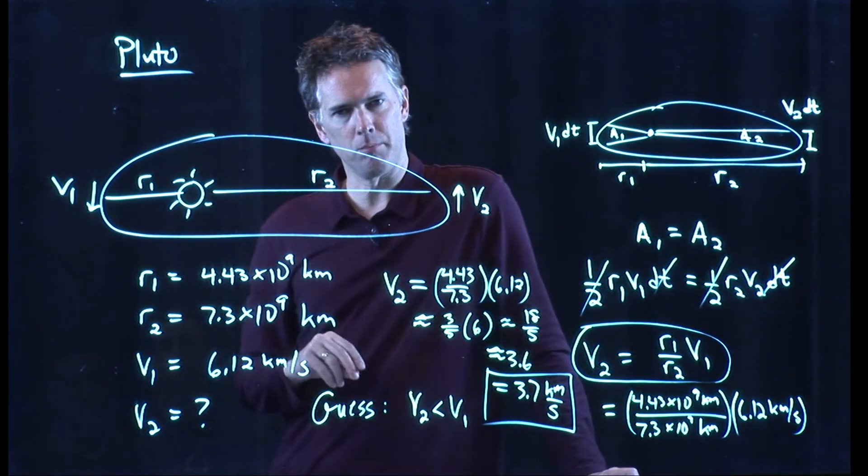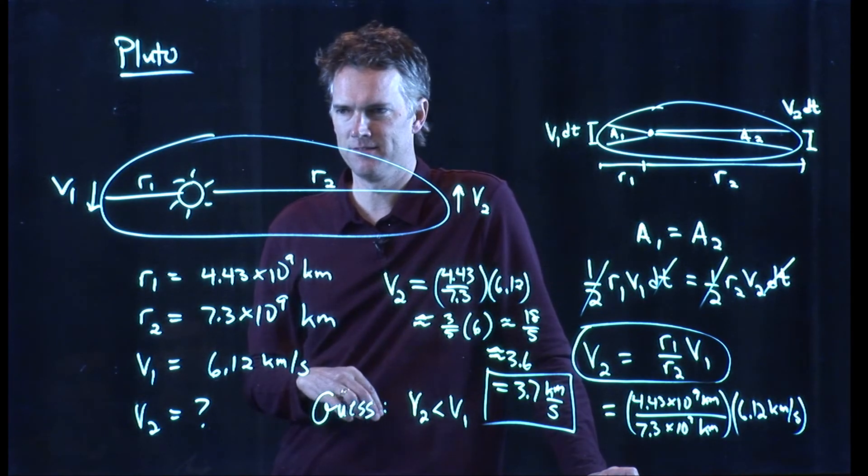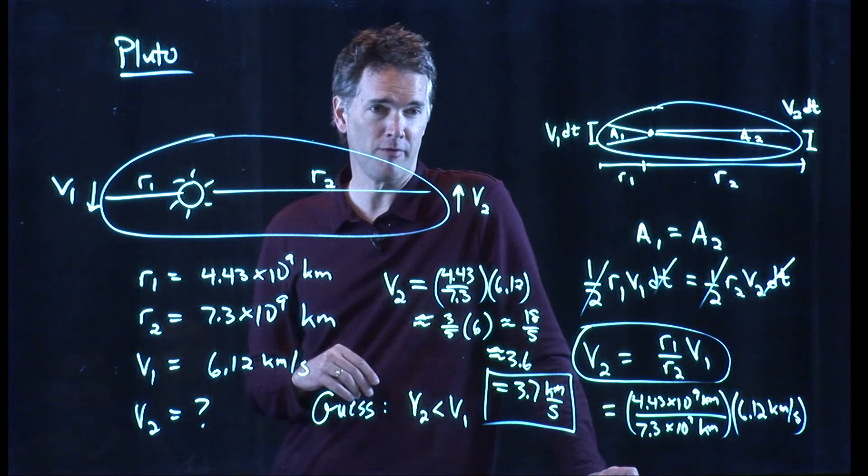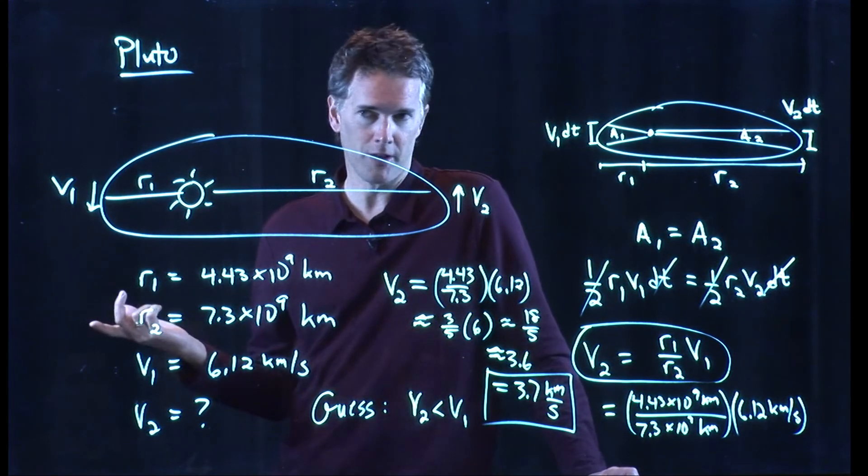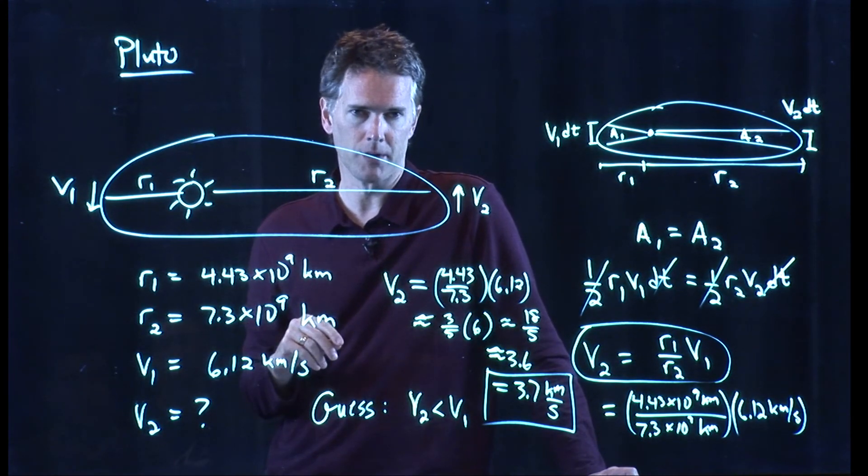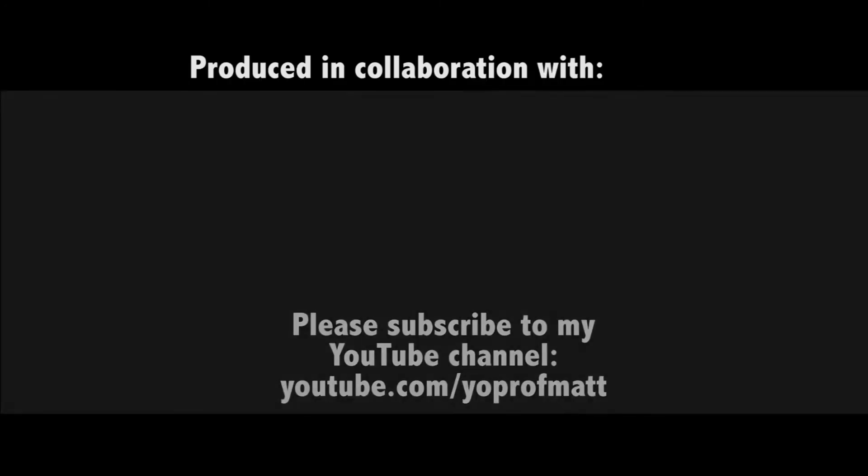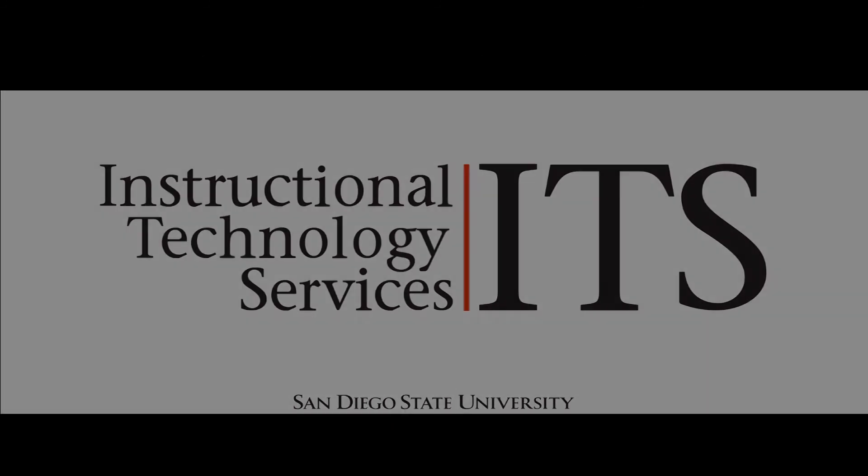Okay. Anybody feel sorry for Pluto? Used to be a planet and then got demoted. I feel a little sad. But that's what happens when you find other things in your solar system that are bigger than that. Either you make all those other things planets or you demote Pluto to a non-planet, which is what happened, right? So here we go. Thank you.